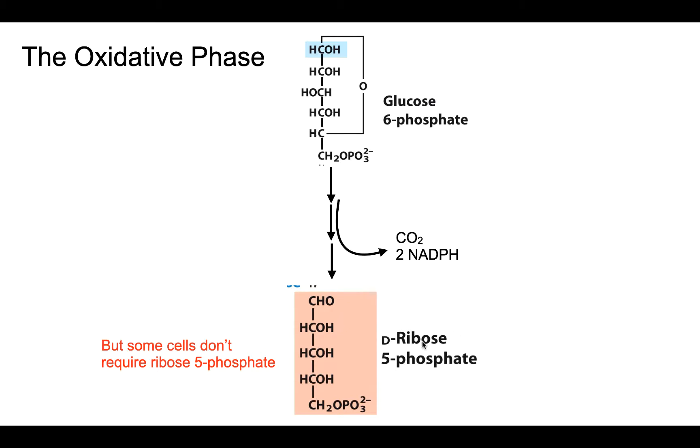ribose 5-phosphate. There are lots of enzymes involved in this; you're not going to have to know them all. But just know the direct entry to this reaction is glucose 6-phosphate. We take glucose 6-phosphate, run it through several reactions, and end up taking one carbon off, so one carbon is released as CO2.